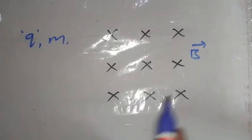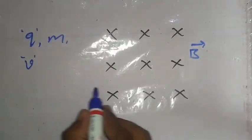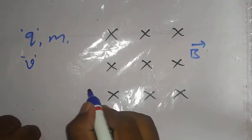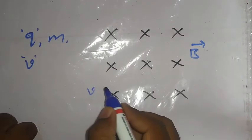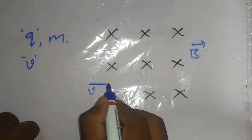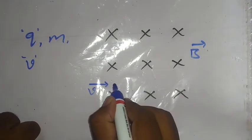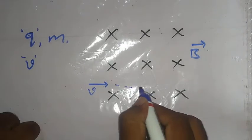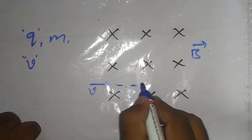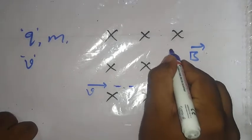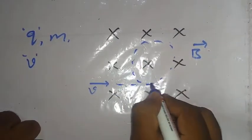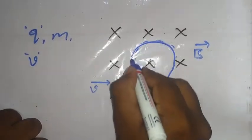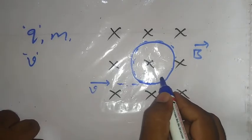This charged particle moves with a velocity V in the uniform magnetic field, such that the velocity of the charged particle is perpendicular to the magnetic field. Under these conditions, it traces a circular path in the uniform magnetic field.